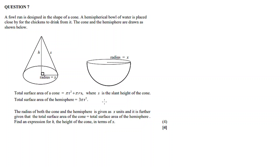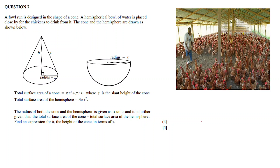So, we have a foul run that is designed in the shape of a cone. A hemispherical bowl of water is placed close by for the chickens to drink from. The cone and the hemisphere are drawn as shown below. So, what is a foul run? It's an enclosure for chickens — like a structure where there's livestock or birds.